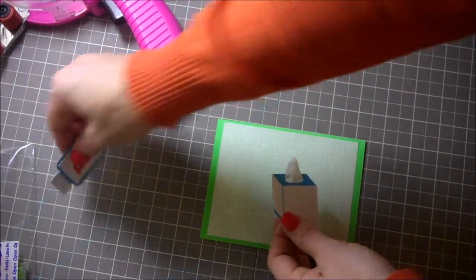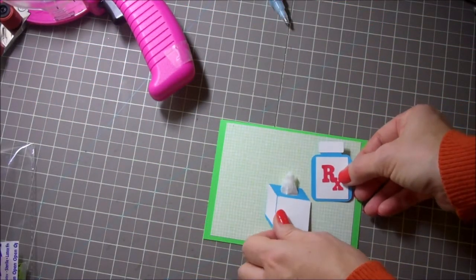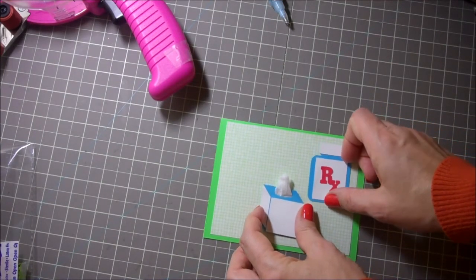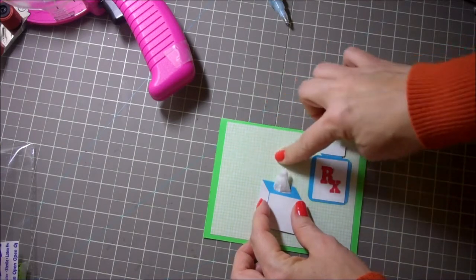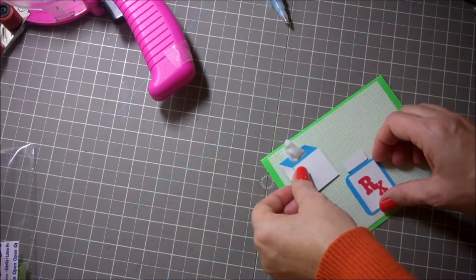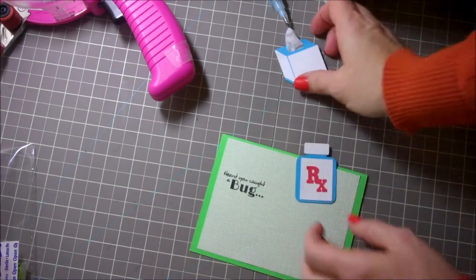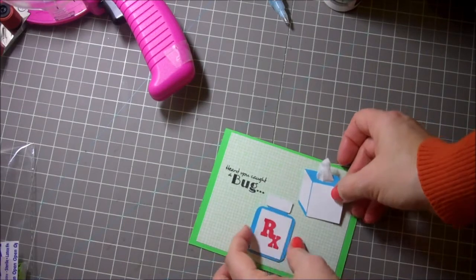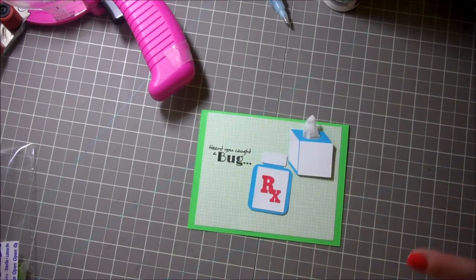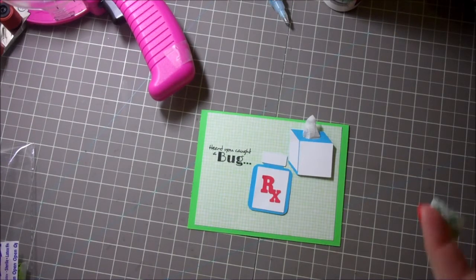So now I'm going to kind of arrange these and figure out how do I want to do this exactly because I do have a sentiment that I also need to add. So I think I kind of like it like that and then maybe this sentiment here. I got to play around with it and see exactly how do I like it. Okay, so I stamped the same sentiment. Heard you caught a bug and then I'm just going to kind of lay these out and then I did, I thought it just needed a little something so I played around with maybe a ribbon or something like that, a bow. So what I've decided to do is just add a little trim to it. So I'll show you what that looks like in just a second.